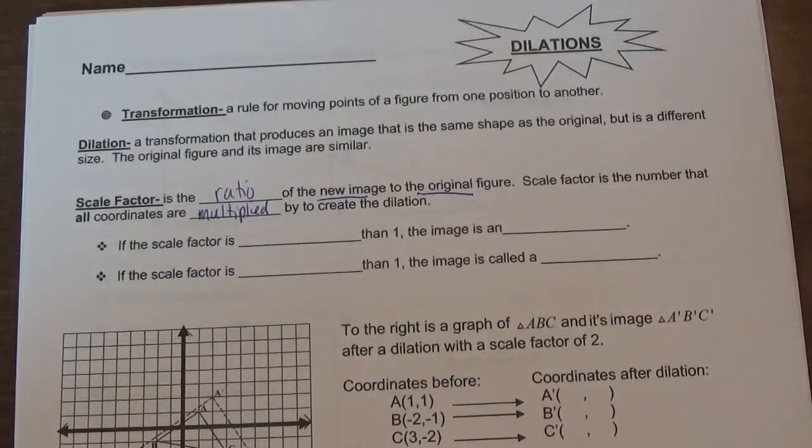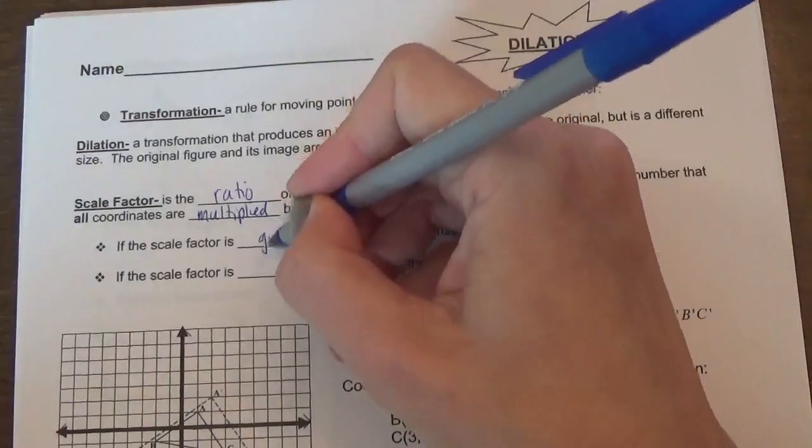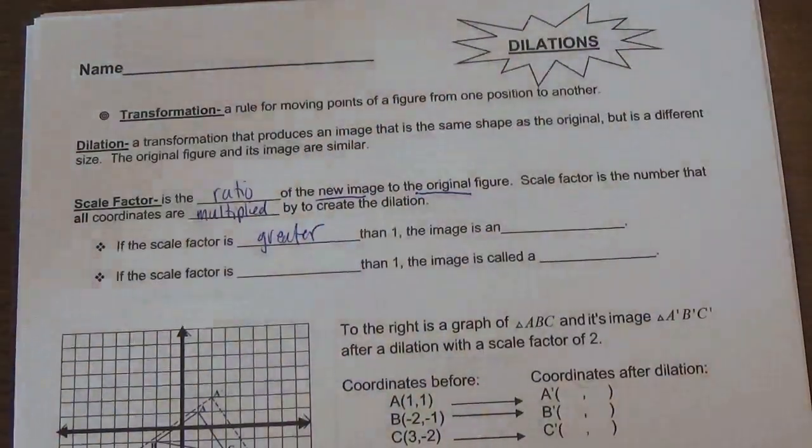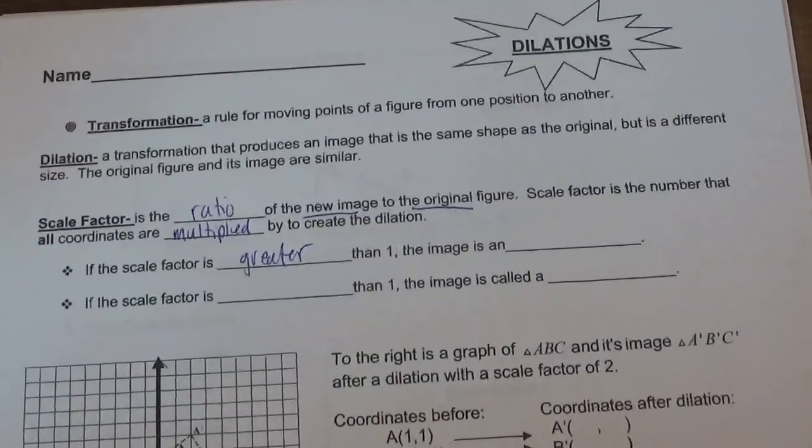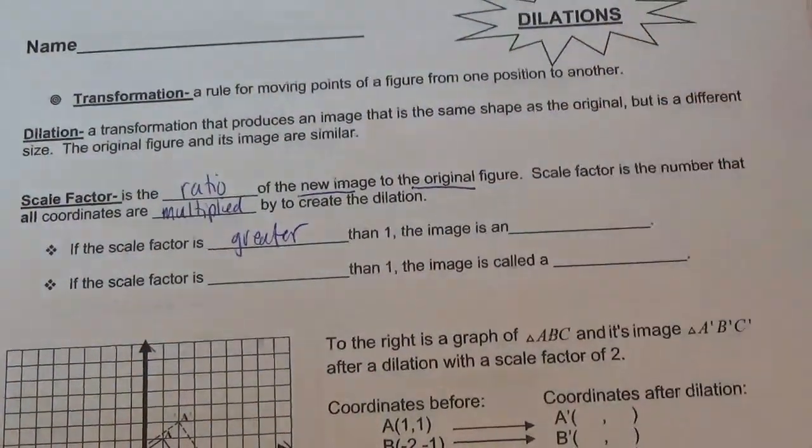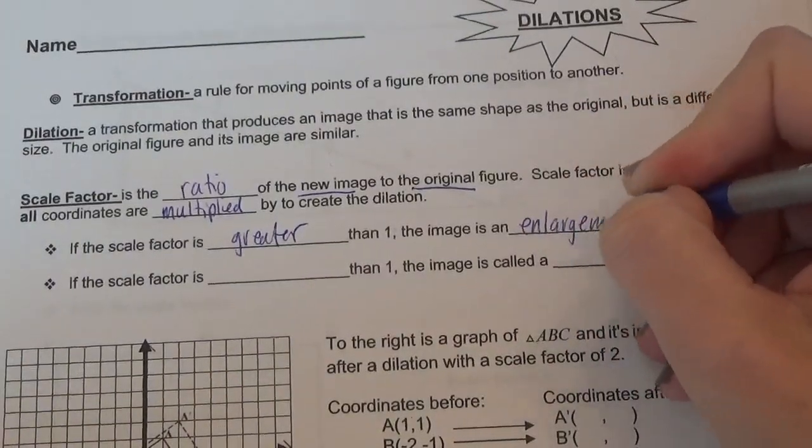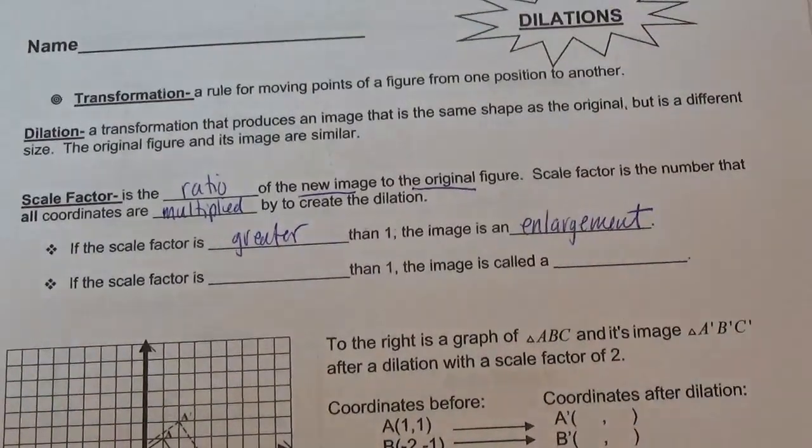If the scale factor is greater than 1, so obviously if you're multiplying by 2, 3, 4, 5, then the image is going to get bigger. They call that an enlargement.